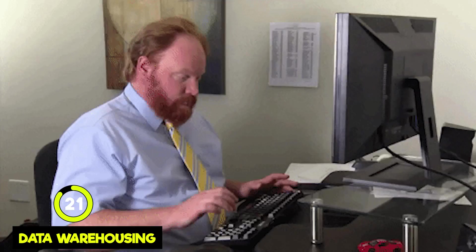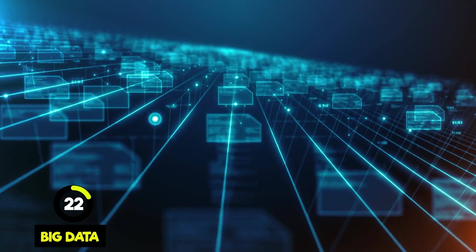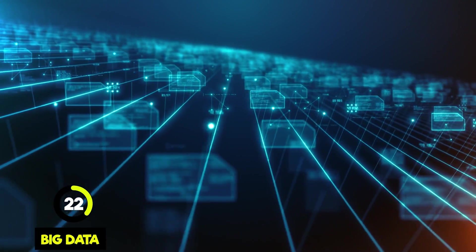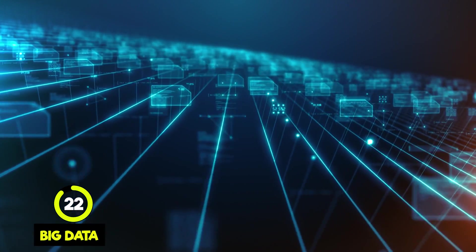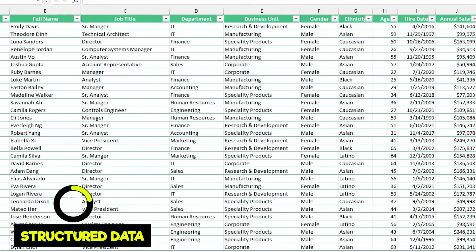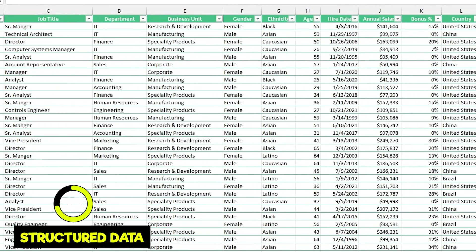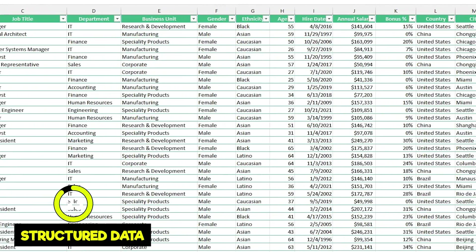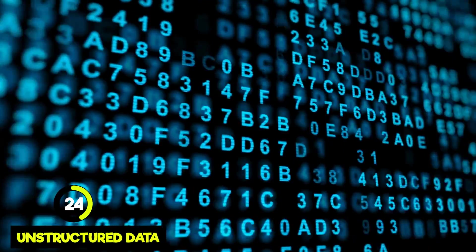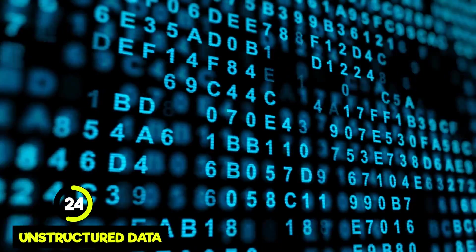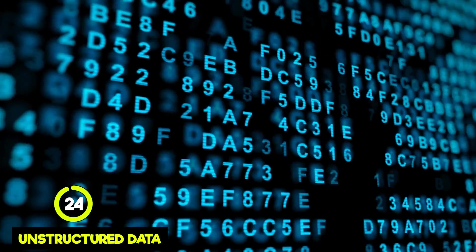Big data refers to huge datasets that are so large they require specific big data tools to work with. Structured data means data that's organized in a specific way, and often that means it's stored in a spreadsheet with rows and columns. Unstructured data has no clear structure to it — it's usually much harder to store and you often can't just put it in a spreadsheet, making it harder to both store and work with.